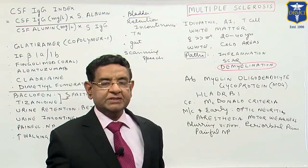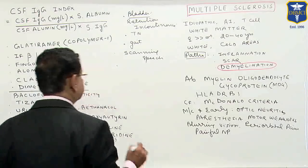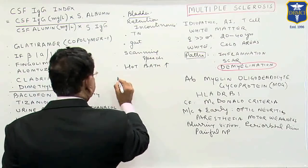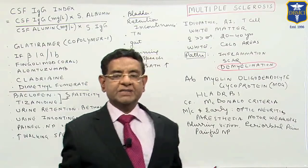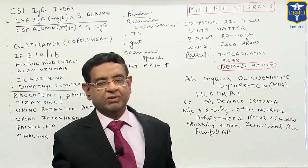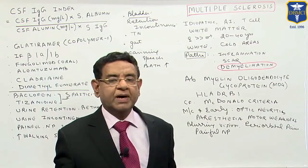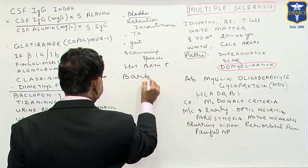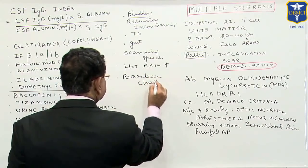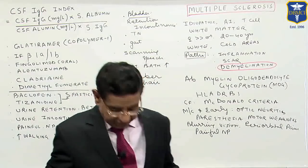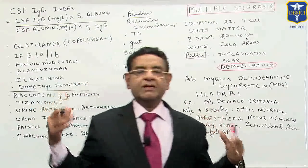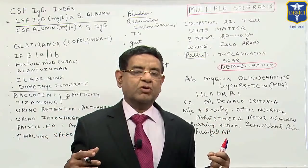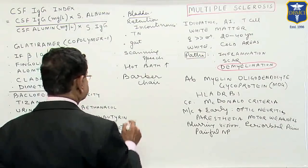An important feature is that the patient's symptoms increase after a hot bath — symptoms are exaggerated, and the patient may even develop new symptoms. We also have the so-called Lhermitte's or barber chair sign: when the patient bends the neck forward, a current-like sensation goes into the lower or upper limb. This sign is again seen in multiple sclerosis.